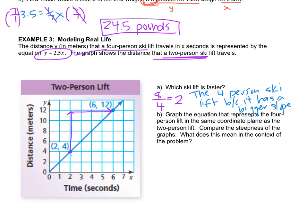Now, in letter B, it says, okay, so see, letter B, we had to graph. Graph the equation that represents the four-person lift in the same coordinate plane as the two-person lift. Compare the steepness of the graphs. What does this mean? We have to graph y equals 2.5x.